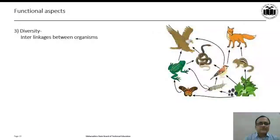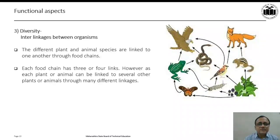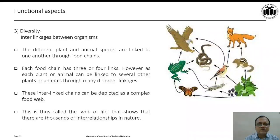The functional aspect number three is regarding diversity which gives the interlinkages between organisms. The different plant and animal species are linked to one another through food chains. Each food chain has three or four links. However, each plant or animal can be linked to several other plants or animals through many different linkages. These interlinked chains can be depicted as a complex food web. This is thus called the web of life that shows that there are thousands of interrelationships in nature. This you can observe in the picture which has been shown over here.